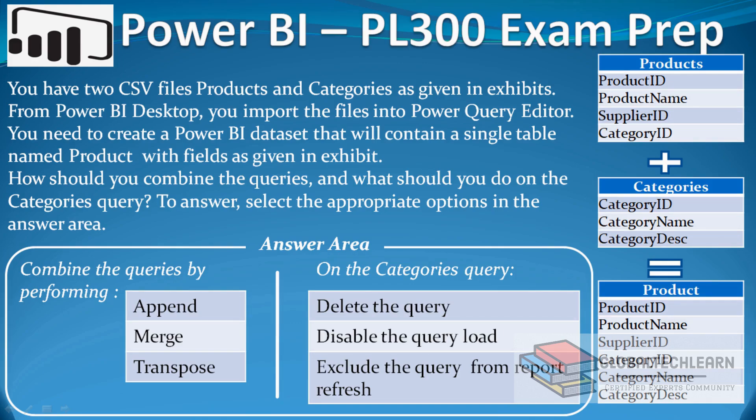Welcome to Global Techler. In this video we will practice how to merge two CSV files in Power BI while applying some best practices to keep the model size minimum. The question is: you have two CSV files, products and categories, as given in the exhibits. From Power BI Desktop you import the files into Power Query Editor and need to create a Power BI dataset that will contain a single table named product with specified fields.